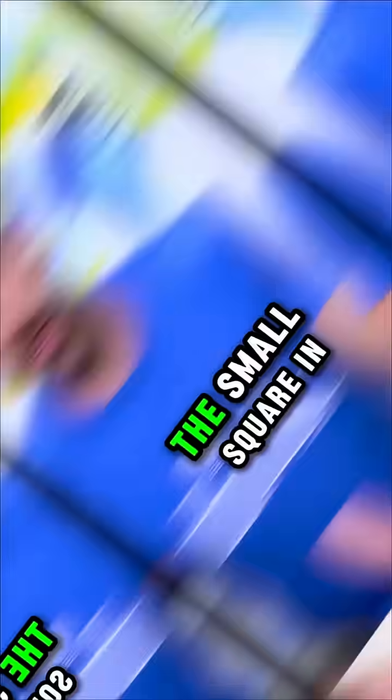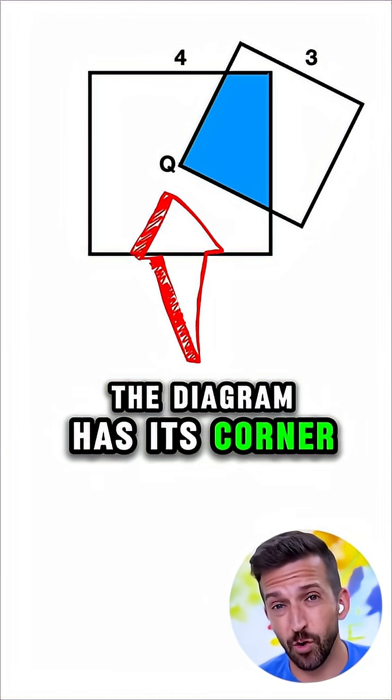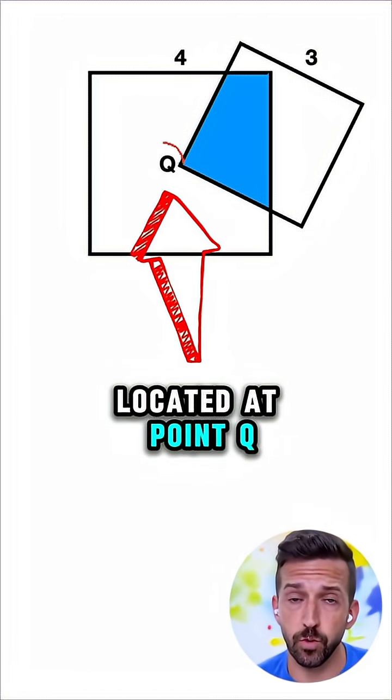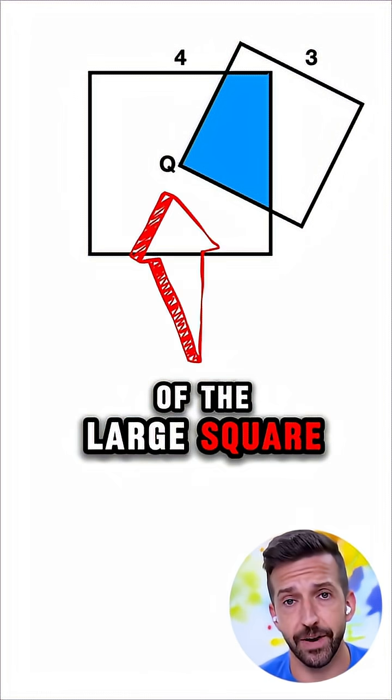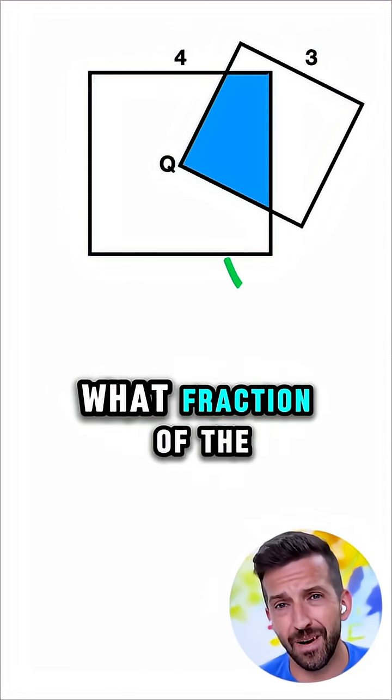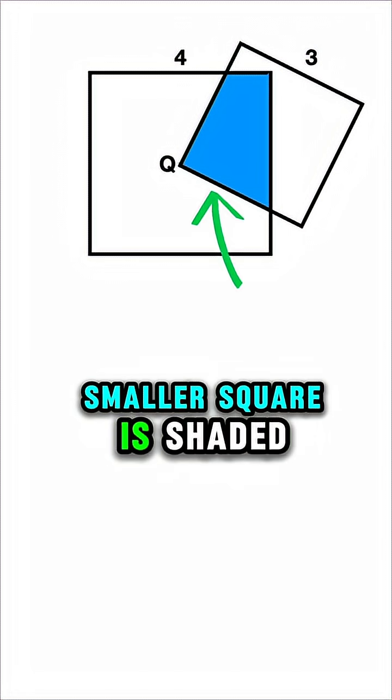Can you answer this challenge question? The small square in the diagram has its corner located at point Q, which is the center of the large square, and the side lengths are given as in the diagram. So here's the question for you. What fraction of the smaller square is shaded?